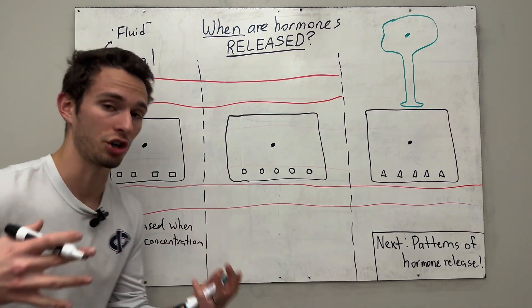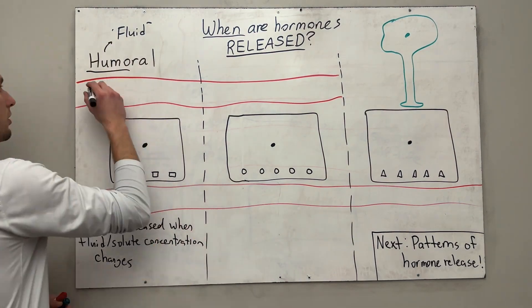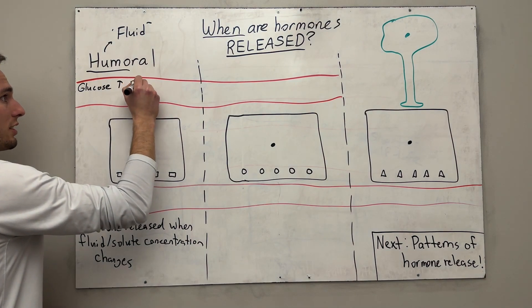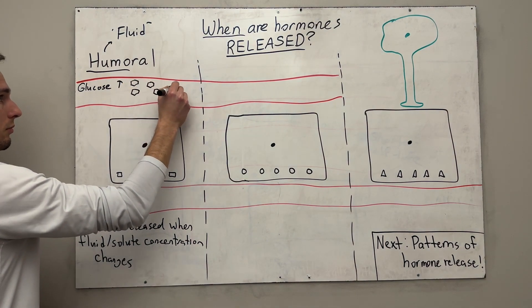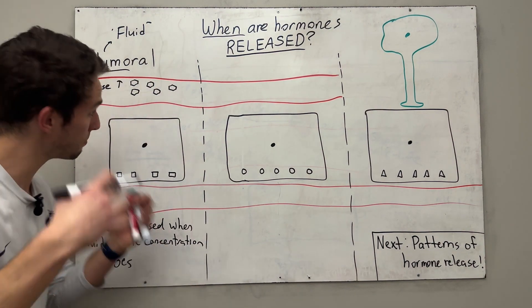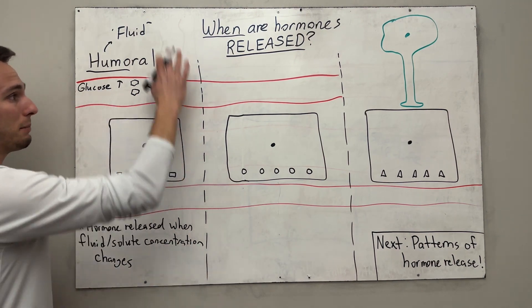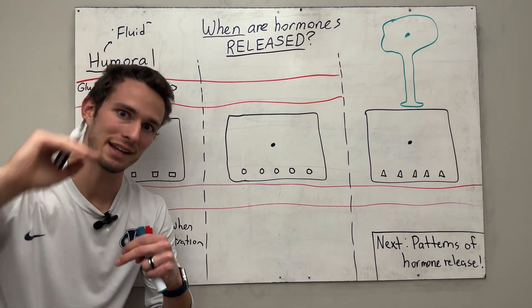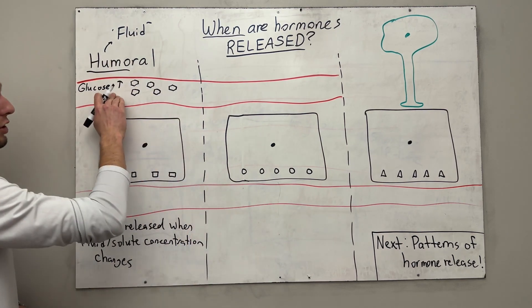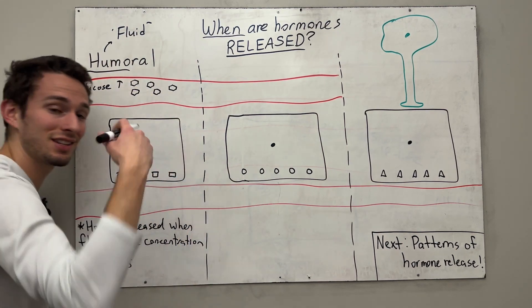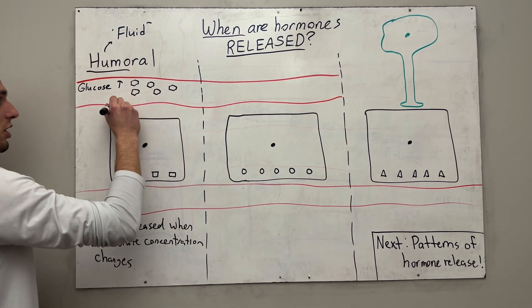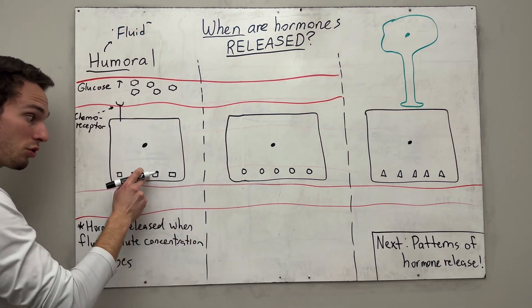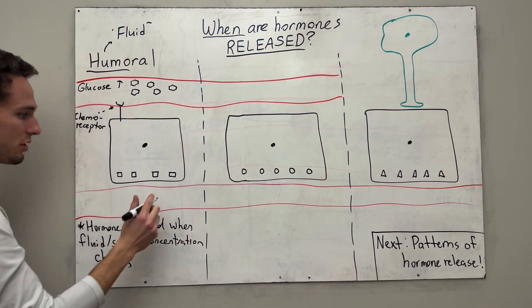Let's say our blood sugar — our blood glucose — goes up. So now you've got a bunch of glucose in your bloodstream. This happens after a meal, of course, but chronic long-term high blood sugar levels are actually dangerous, so we need to be able to bring that down.